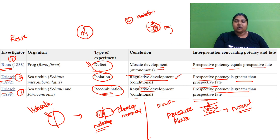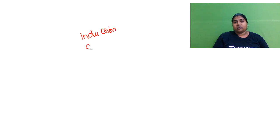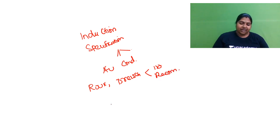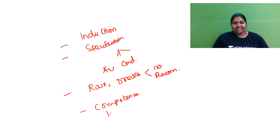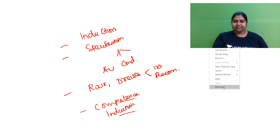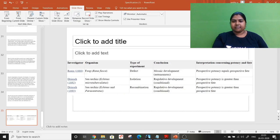To wrap up: today we learned about induction and competence (PAX6 as the competence factor), the different models of specification — autonomous and conditional — and the key experiments: the Roux experiment, and the Driesch isolation and recombination experiments. All the best for your preparation — if you have any doubts, just ping me.